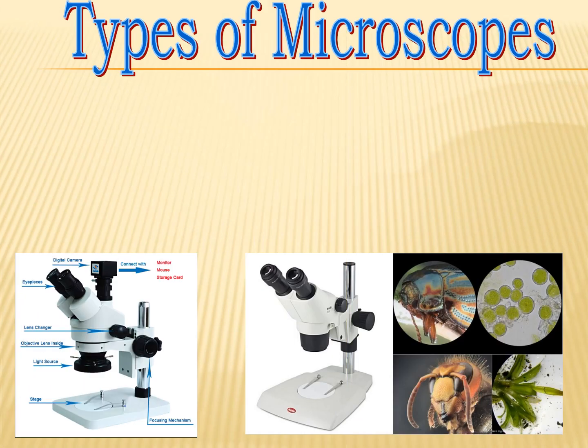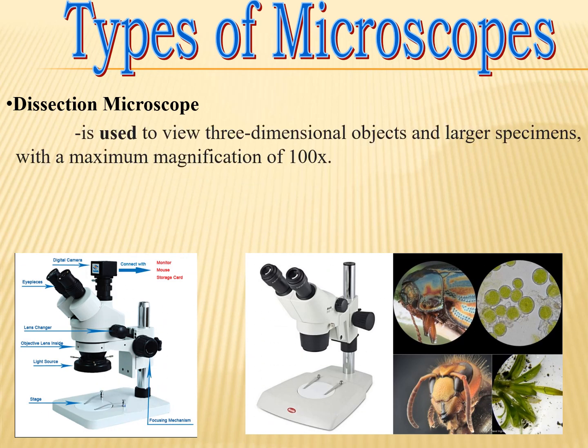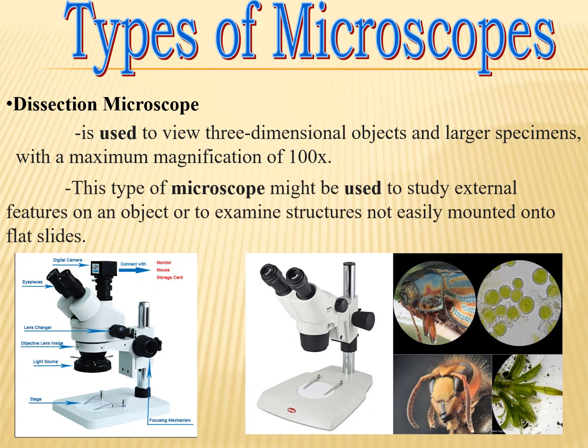The stereo microscope is used to view three-dimensional objects and larger specimens, with a maximum magnification of 100x. This type of microscope might be used to study external features on an object or to examine structures not easily mounted onto flat slides.